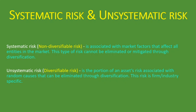If it's a specific firm or a specific industry, then it's unsystematic risk and it can be diversified. A company is exposed to both systematic and unsystematic risk. The total risk that a company is exposed to is: total risk = systematic risk + unsystematic risk.